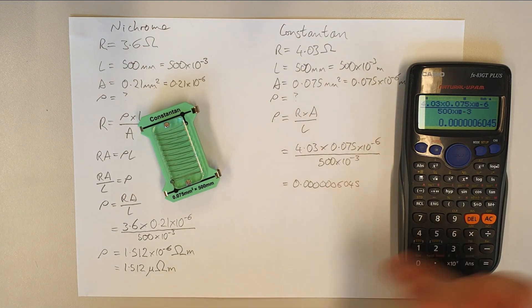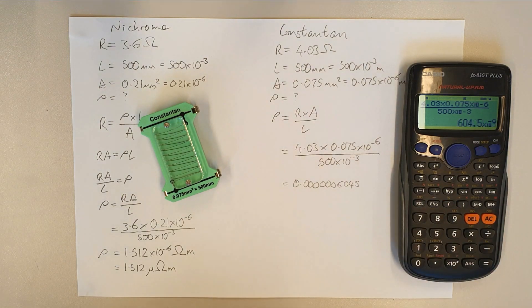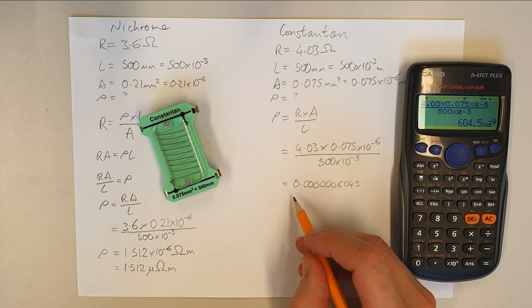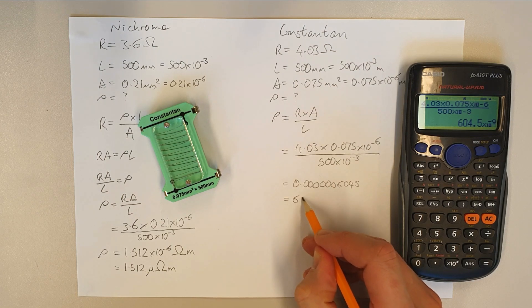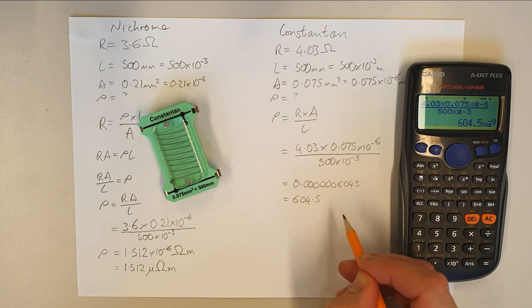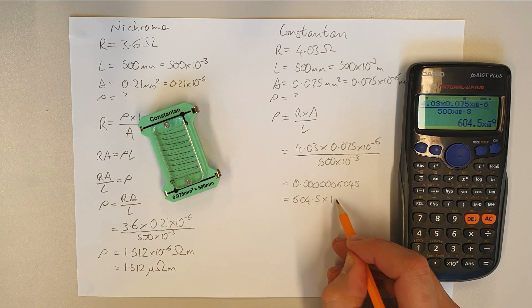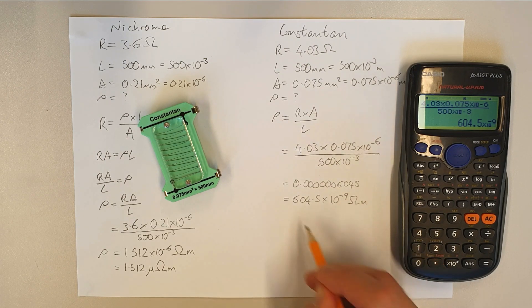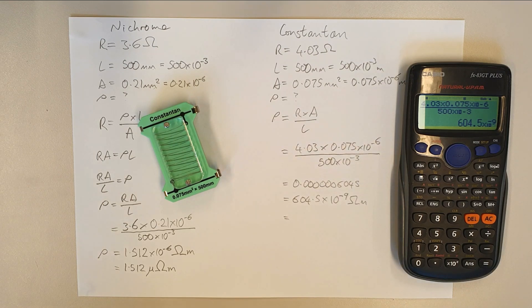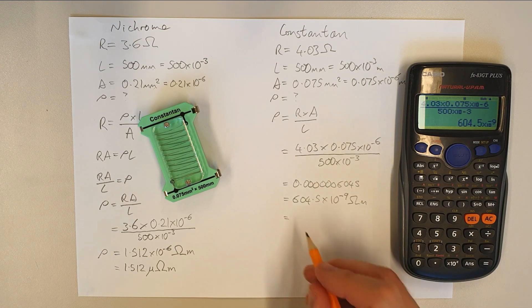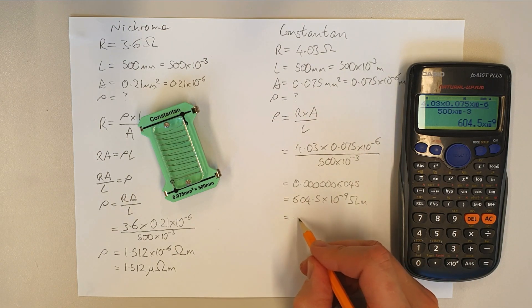That as a value is not much good to anybody. So if we hit the ENG button, then we come out with a value of 604.5 and now we've got times 10 to the minus 9 ohm meters. So quite a microscopic value there, as you can see, because we've got a much thinner conductor that we're using here. So you can see there that that is going to be, we could write this. There's a couple of ways we could do this.